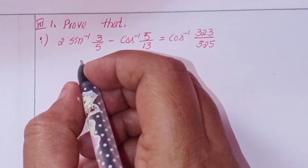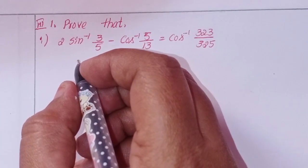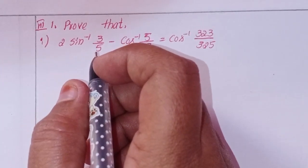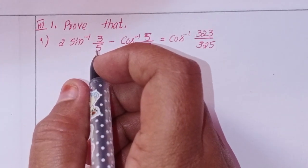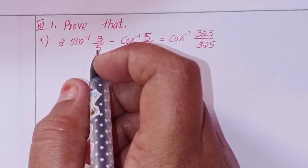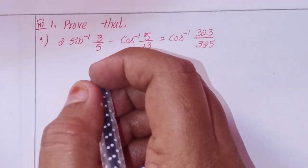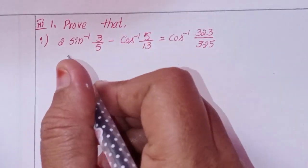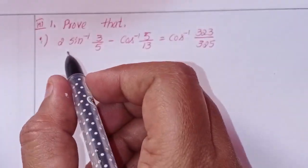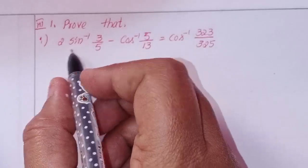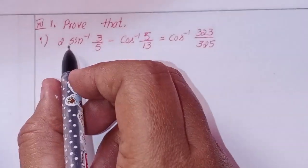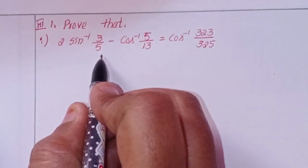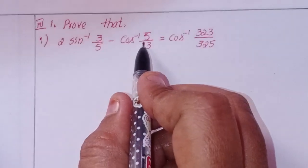Hi viewers, this is Shaheen and welcome to my channel. Today we will discuss intermediate first year, chapter 8, inverse trigonometric functions, exercise 8a, third roman, first problem: prove that 2·sin⁻¹(3/5) minus cos⁻¹(5/13) equals cos⁻¹(323/325).